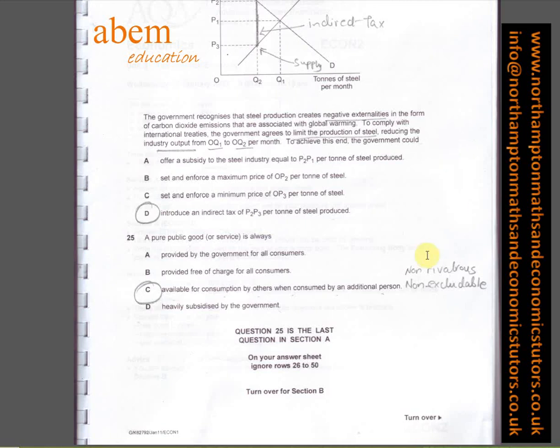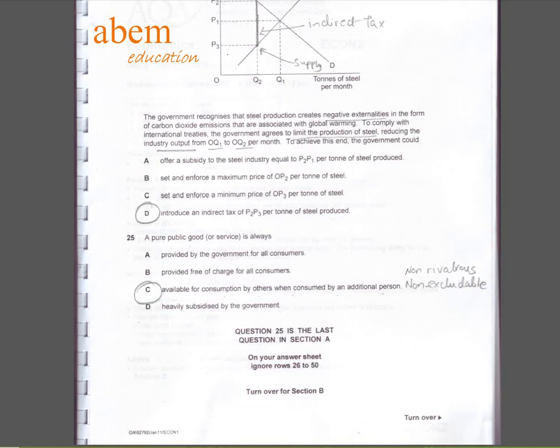In question number twenty-five, a pure public good or service is always available for consumption by others when consumed by an additional person. By characteristic, it's non-rivalrous.